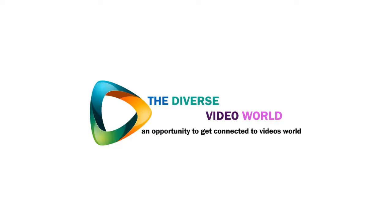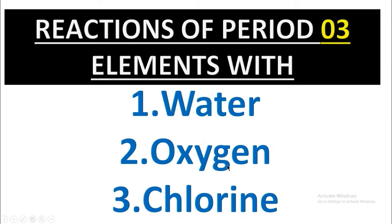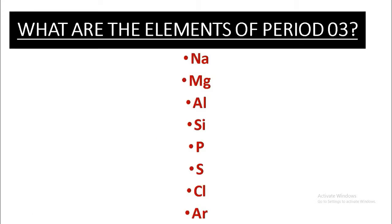In this video we will show some reactions of Period 3 elements with water, oxygen, and chlorine. Before going through the reactions, let's look at the elements of Period 3. The elements are sodium, magnesium, aluminum, silicon, phosphorus, sulfur, chlorine, and argon, and we will discuss each element's reaction with oxygen, water, and chlorine.